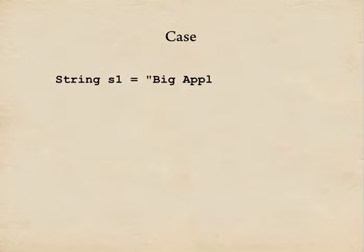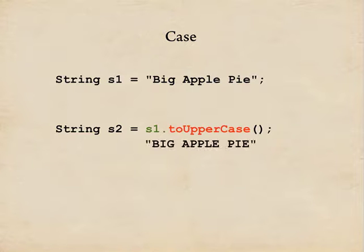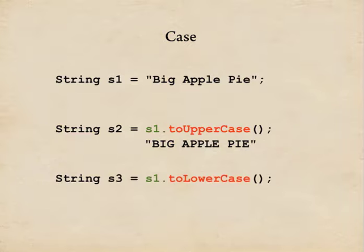Another handy utility is for changing the case of a string. If I have a string which is a mix of upper and lowercase characters and I call toUpperCase — notice the U and the C are capitalized because this is a camel case call — well, you'll never guess what happens: we get back a new string that's all in uppercase. If I call toLowerCase, it all comes back in lowercase.